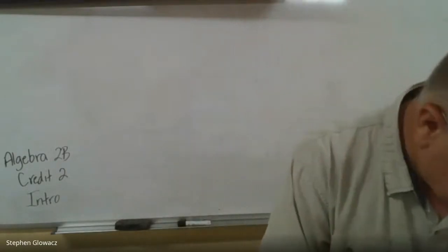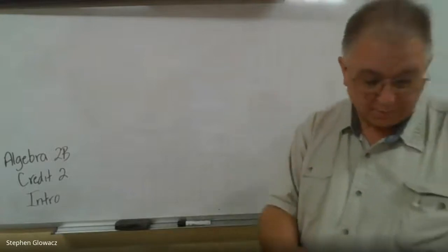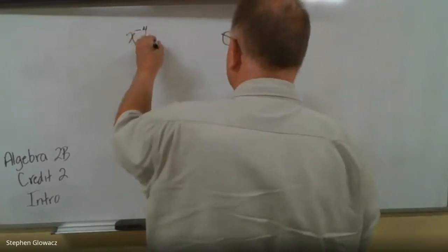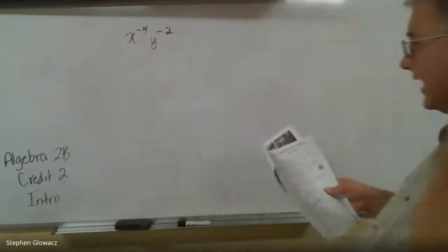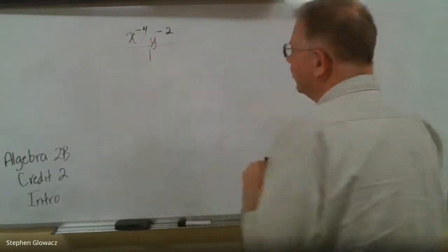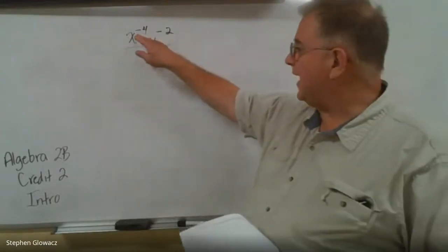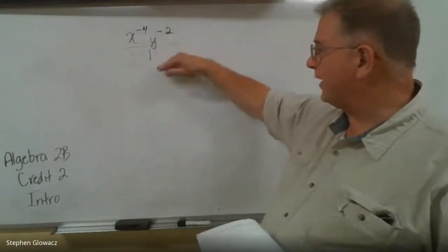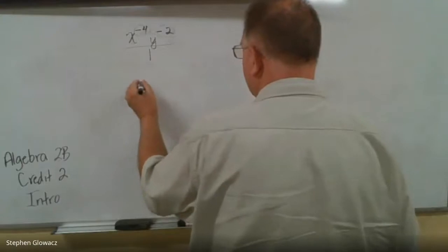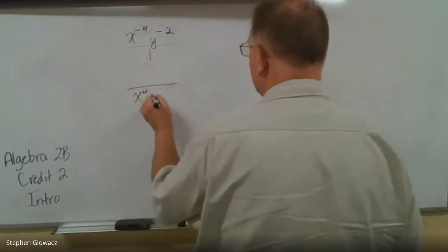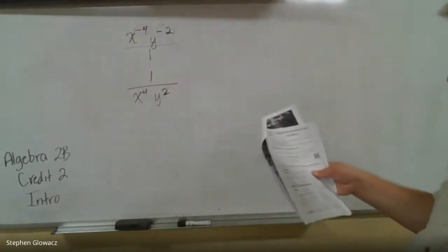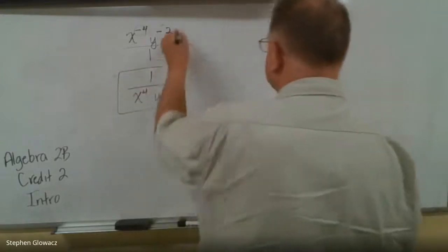We're on page 5. On the first three problems, they want us to rewrite each expression using only positive exponents. Number 1: we've got x to the negative 4th, y to the negative 2nd. We can think of this as a fraction — put 1 in the numerator. To make a negative exponent positive, you drop it to the other side of the fraction. So x to the 4th, y to the 2nd go to the bottom, giving us 1 over x to the 4th, y to the 2nd.